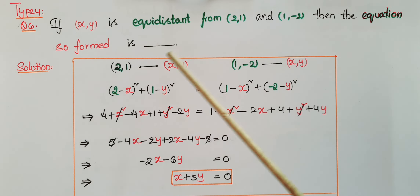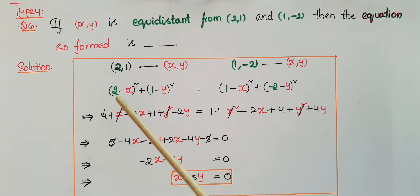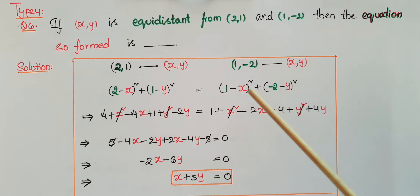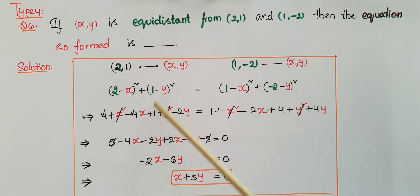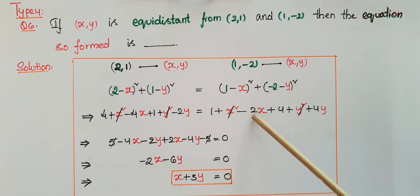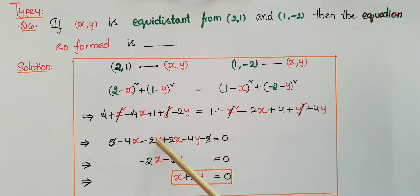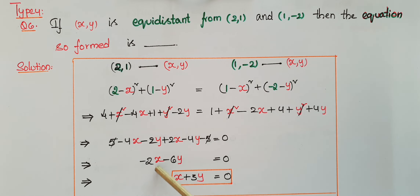Another type of question: if (x, y) is equidistant from (2, 1) and (1, -2), find the equation formed. Setting the distances equal and squaring: (2 minus x) squared plus (1 minus y) squared equals (1 minus x) squared plus (-2 minus y) squared. Expanding: 4 plus x squared minus 4x plus 1 plus y squared minus 2y equals 1 plus x squared minus 2x plus 4 plus y squared plus 4y. Cancel x squared and y squared; 5 minus 4x minus 2y equals 5 minus 2x plus 4y. Simplifying: -2x minus 6y equals 0. Dividing by 2: x plus 3y equals 0. This is the equation formed.